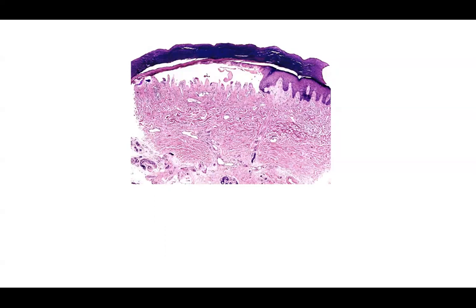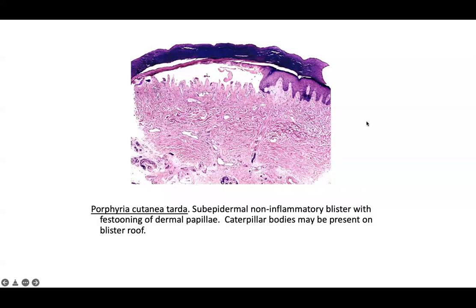Sticking with the blistering theme — you have a very cell-poor blister with eosinophilic collections on the upper portion of the blister called caterpillar bodies. You'll have this festooning pattern of the dermal papilla, extending up and almost floating like a plant at the bottom of the ocean. This is porphyria cutanea tarda — instant recognition. This looks like it's on an acral surface with a thick hyperorthokeratotic stratum corneum, probably the dorsal hand. You'll want to see a subepidermal non-inflammatory blister with festooning of the dermal papilla, and caterpillar bodies may be present on the blister roof.